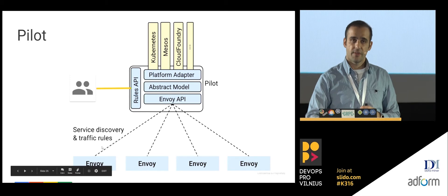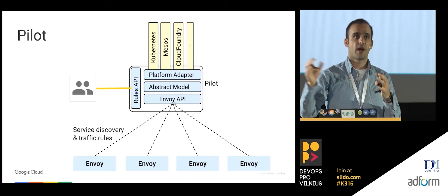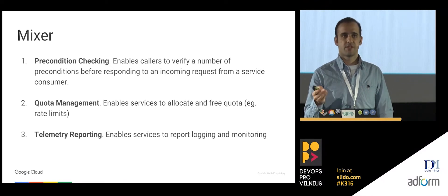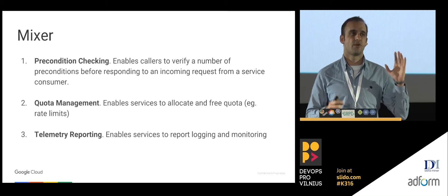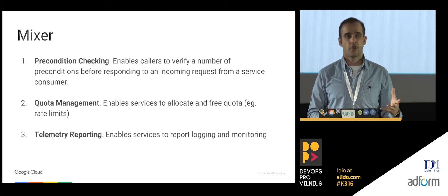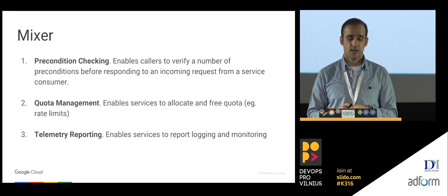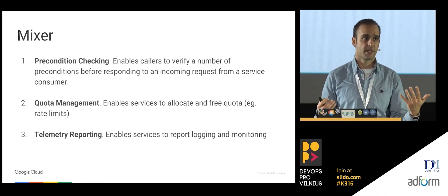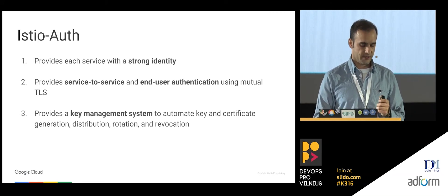Mixer does precondition checking — if your microservice wants to talk to another, it checks with Mixer first. It also does quota management: you set quotas in Istio and Mixer enforces them. And it handles telemetry reporting — metrics get sent to Mixer and Mixer aggregates them. Istio auth does mutual authentication between your proxies.